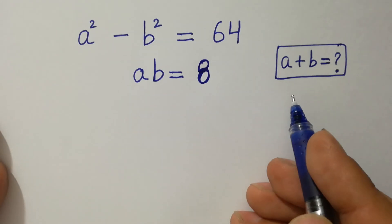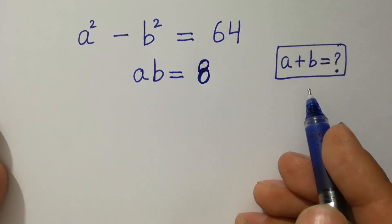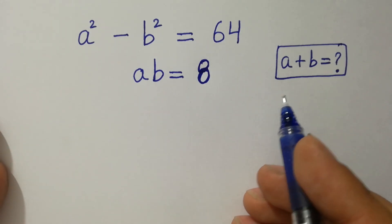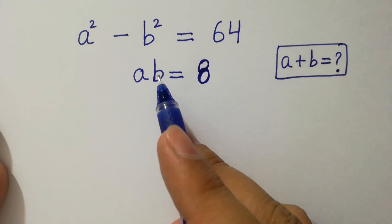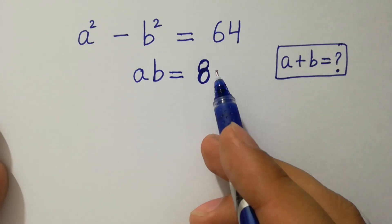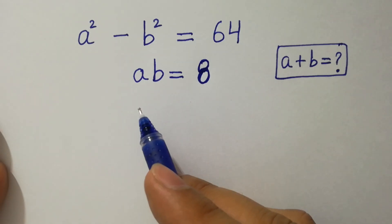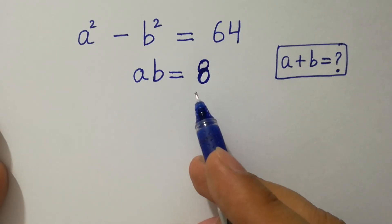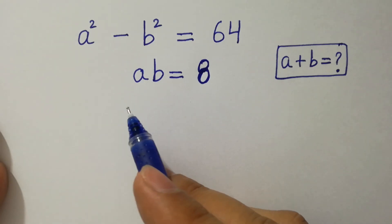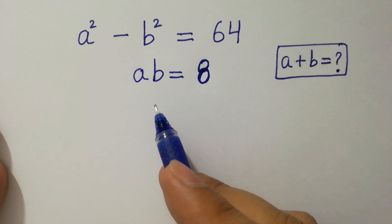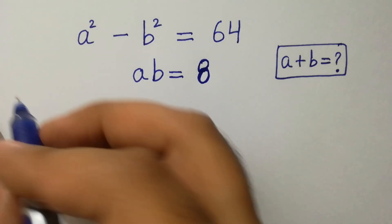Hello friends. Find the value of a plus b if a squared minus b squared equals 64 and ab equals 8, where a and b are non-negative. Let's have a solution.